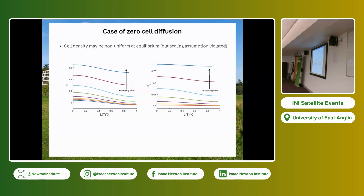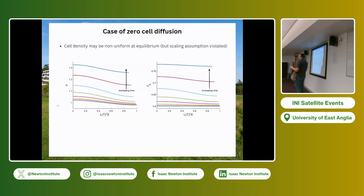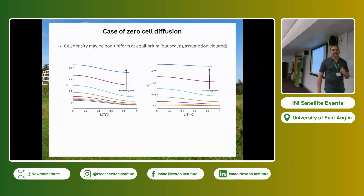The final case is interesting: if you turn off cell diffusion, you can get equilibria where the cell distribution is not uniform. However, when we derived our thin film approximation, one thing we needed to ensure it all worked was that we scaled the diffusion term to be order one. So this is a little bit dodgy, but if you naively set D equals zero in the model, you can get solutions with non-uniform cell distributions.